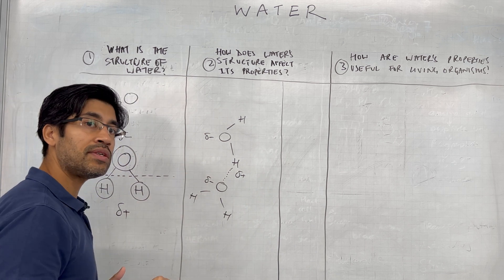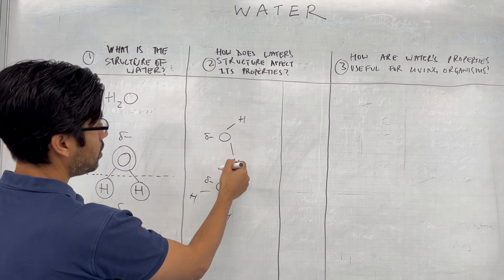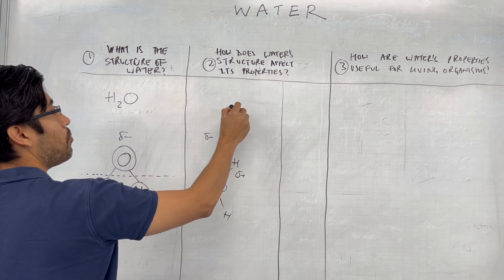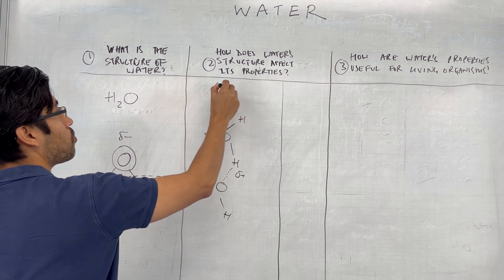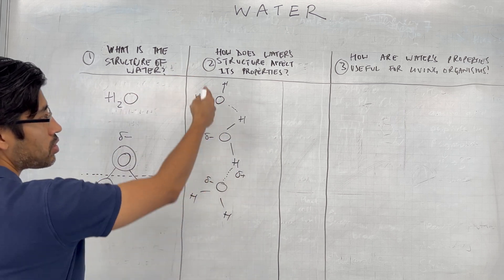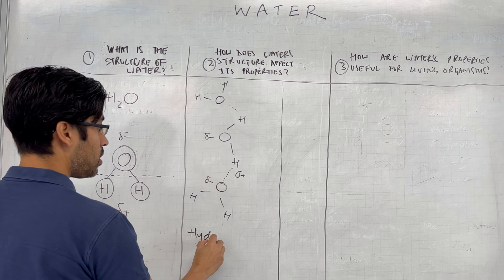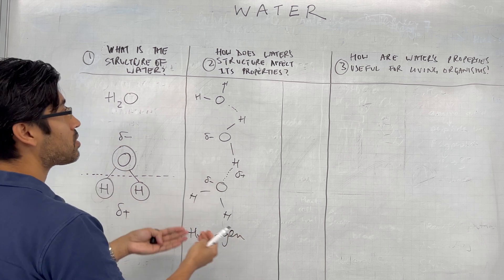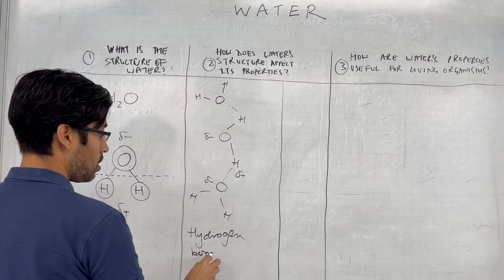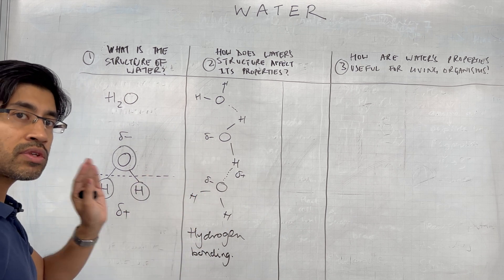These are your hydrogen bonds, whereas the bonds within the molecule itself are covalent bonds. This can continue — a hydrogen can form a hydrogen bond with the oxygen of another water molecule, and so on. You can see why, if you pull one water molecule, the others will follow because of that attraction between them. Hydrogen bonding is the key connection between water structure and its properties.